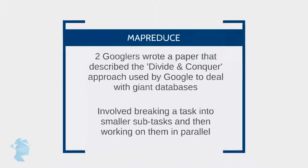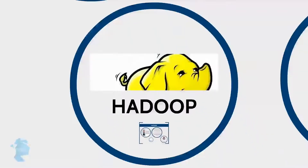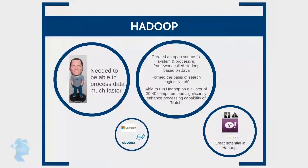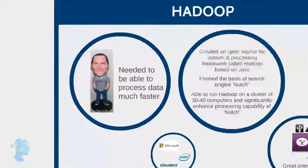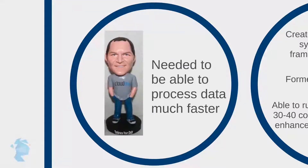Open source software enthusiast Doug Cutting was deeply inspired by this Google paper. Doug had been working on creating an open source search engine and had been struggling with scale. He was able to process a couple of hundred million web pages, but the requirement was for something 10,000 to 100,000 times faster — the computing power Google generates when it processes the trillions of web pages in existence. Doug realized that the MapReduce framework was ideal for processing such large amounts of data.